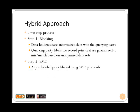Our hybrid approach consists of two steps: blocking and SMC. In the blocking step, data holders independently anonymize their data sets and share the output with the querying party. Using anonymized data sets, the querying party's purpose is to label as many record pairs as possible. Anonymized data sets are imprecise due to generalization and suppression. Therefore, some record pairs cannot be matched or mismatched in the blocking step. Such record pairs are labeled in the SMC step, where the querying party engages in a series of SMC protocols respecting the upper bound on the number of SMC operations imposed by the data holders.